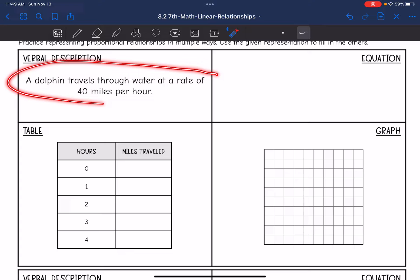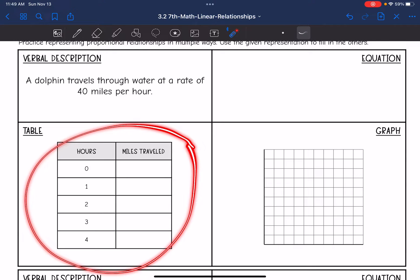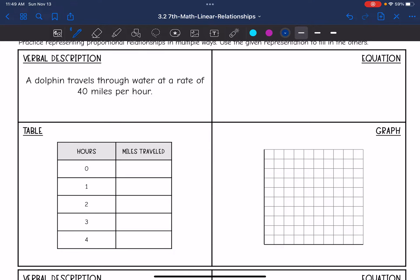They gave us a verbal description. It says a dolphin travels through water at a rate of 40 miles per hour. So when possible, I like to start with the table because it's easy for me to go from the table to the equation. And then after the table, I can just graph those ordered pairs. So let's fill out the table first.